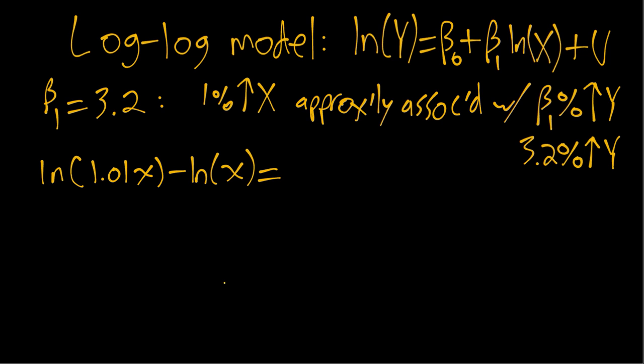and then using those log properties, we can rewrite that as the ratio x. So we can see those x's will just cancel out there, and we'll get the log of 1.01,